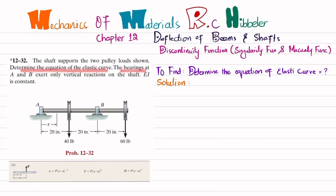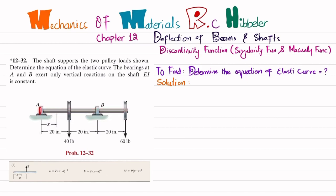The bearings at A and B exert only vertical forces on the shaft. EI is constant. You can see the shaft is supported by bearings A and B that exert only vertical forces, and the loads on the pulleys are 60 pounds and 40 pounds. We have to find the equation of elastic curve, which is basically the equation of deflection for this shaft.